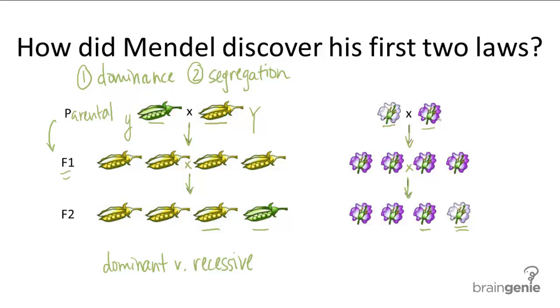And here again, the purple flower is dominant and the little p is recessive. And so it's not that the recessive allele just completely disappeared. It was just masked by the dominant allele. So it was hidden.